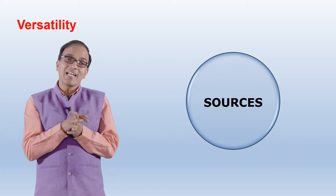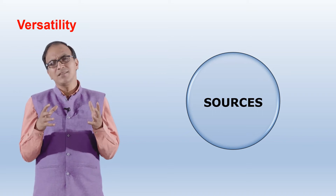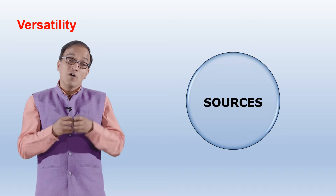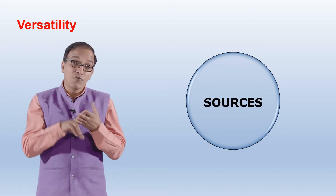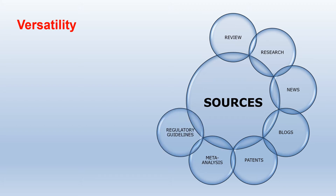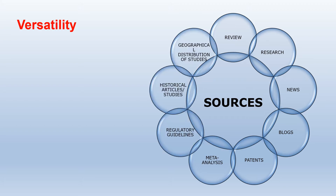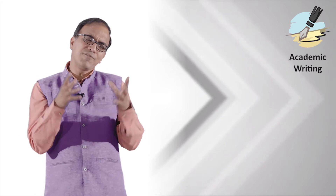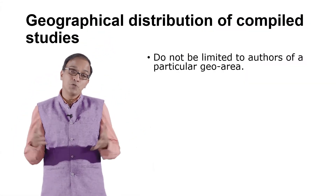The next feature is versatility. Versatility means your literature review must contain a good mix and variety of sources — like review articles, research articles, news, blogs, patents, meta-analyses, regulatory guidelines, historical articles, studies, and geographical distribution of compiled studies.